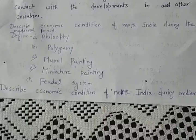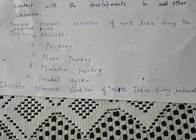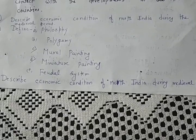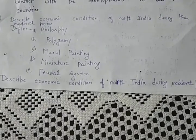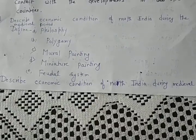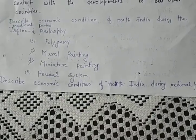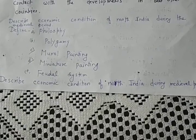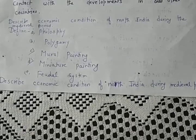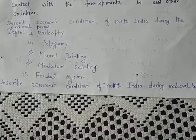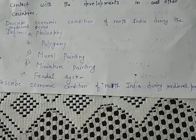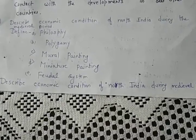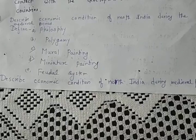First question: Describe the economic condition of North India during the medieval period. There was a great economic disparity among different social classes. The royal families, officials, and traders were prosperous, while the people living in villages were poor. The temples were the centers of riches and hence attracted a lot of invaders. Feudal system was prevalent in North India.